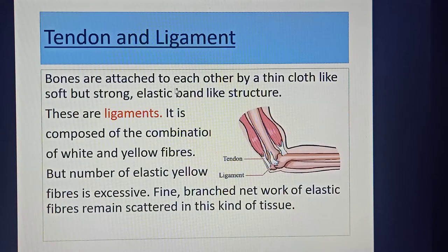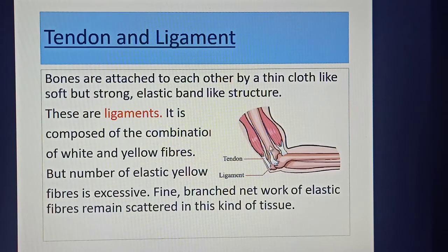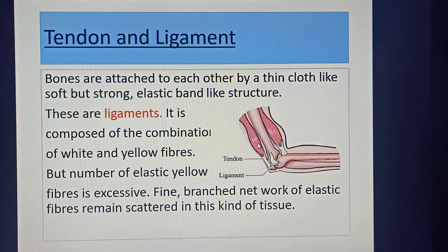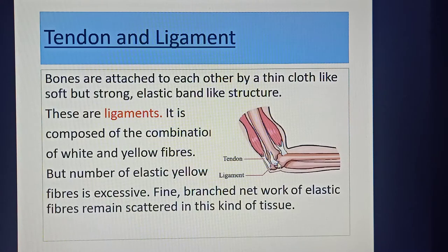Bones are attached to each other by a thin, cloth-like, soft but strong elastic band-like structure called a ligament. Looking at the diagram: the two bones are connected with each other through this band-like structure — that is the ligament. The cluster of muscles is attached to the bone through the white-colored structure — that is the tendon. So: a ligament is the connective tissue that connects two bones, and a tendon is the connective tissue that connects muscle with bone.